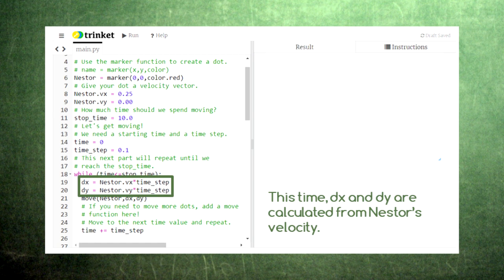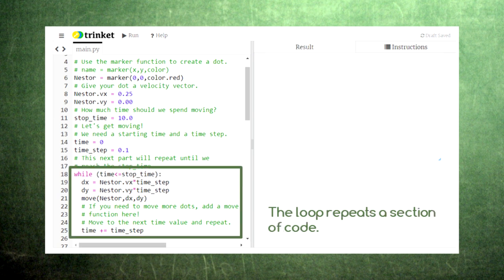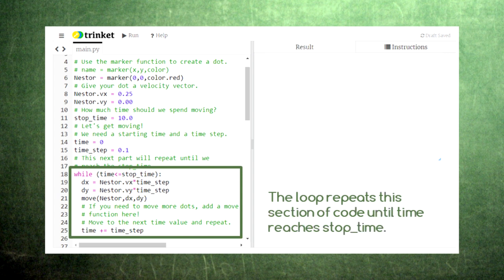But this time we're calculating dx and dy using Nestor's velocity. This process of calculating dx and dy and then moving Nestor will repeat because we've placed them inside something called a while loop. The word while here tells the computer to repeat everything underneath it until we reach the stopping condition. In this case, the stopping condition triggers when our value of time reaches the stopping time that we specify.